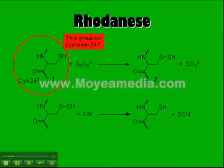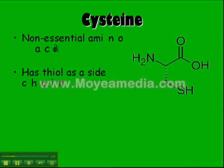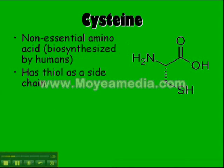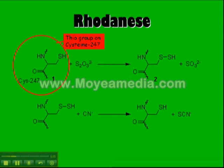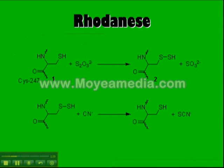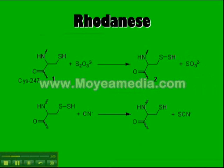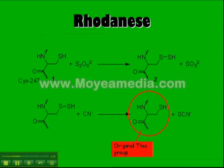I will now explain this reaction. First, you start off with cysteine — a non-essential amino acid which is biosynthesized by humans. The most important part is that it has a thiol side group. This thiol side group reacts with thiosulfate to create disulfide and sulfur trioxides. The disulfide then reacts with the cyanide to create the original thiol group and thiocyanate, which is a much less toxic version of cyanide.